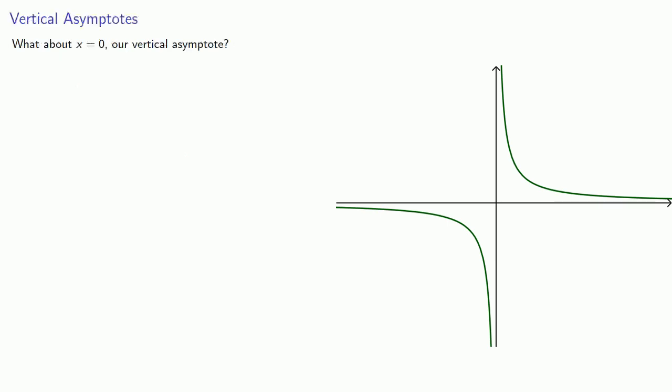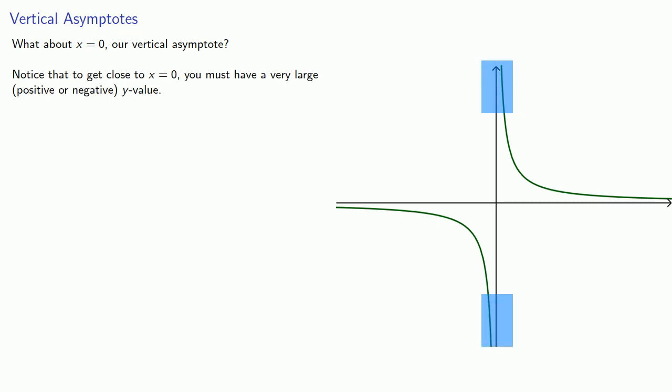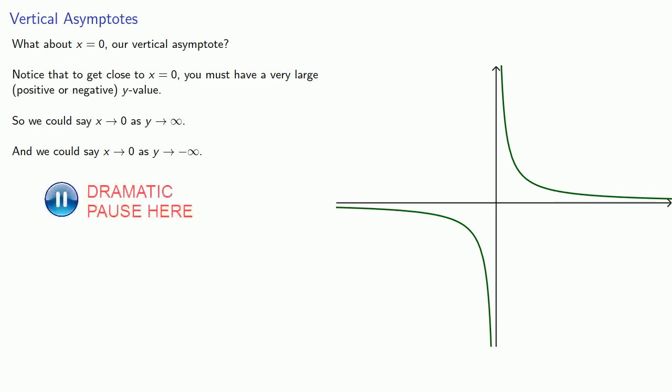What about x = 0, our vertical asymptote? To get close to x = 0, you must have a very large positive or negative y-value. We could say x → 0 as y → ∞, and x → 0 as y → -∞. But we don't, because we like to think about y as a function. As x is going to 0, y does two completely different things and we don't like that.